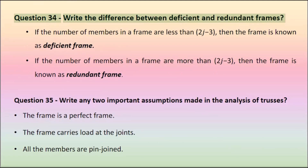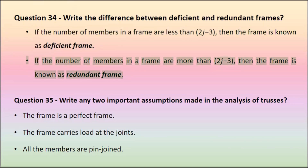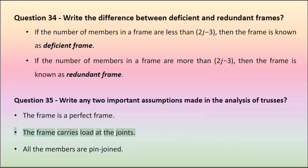Question 34: Write the difference between deficient and redundant frames. If the number of members in a frame are less than 2j minus 3, then the frame is known as a deficient frame. If the number of members in a frame are more than 2j minus 3, then the frame is known as a redundant frame. Question 35: Write any two important assumptions made in the analysis of trusses. The frame is a perfect frame. The frame carries load at the joints. All the members are pin-jointed.